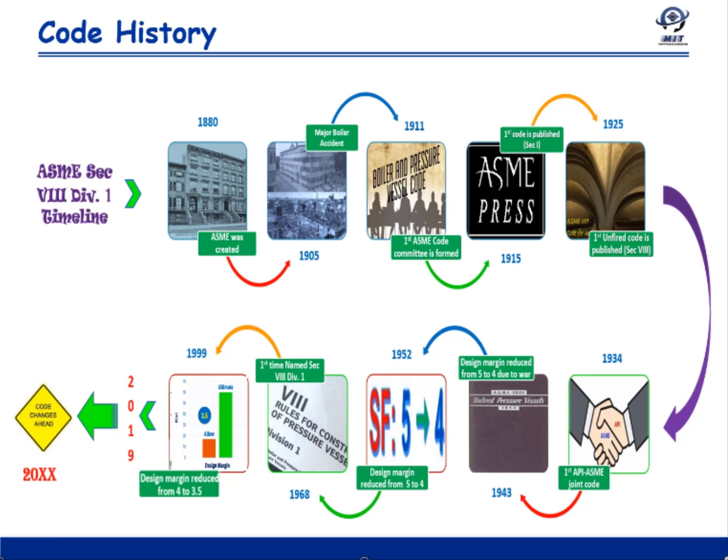In the year 1884, ASME issued its first code named Code of Conduct for Trial of Steam Boilers.